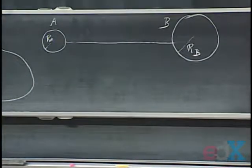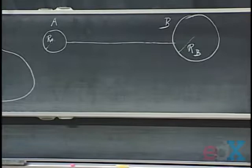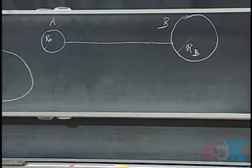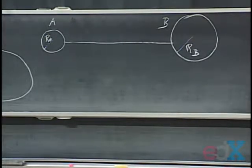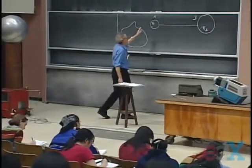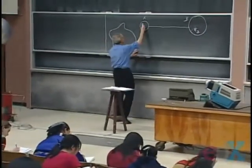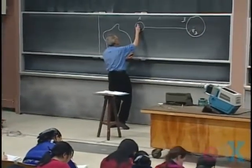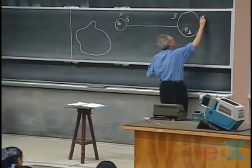If they are connected through a conducting wire, then the system is equipotential — they all have the same potential. I'm going to charge them up so I get a charge Q_A on A and Q_B on B.